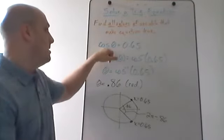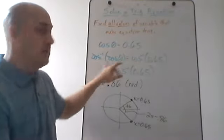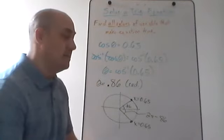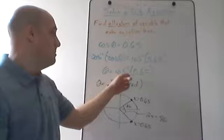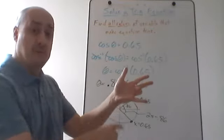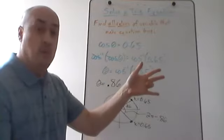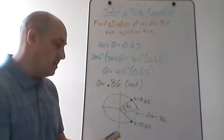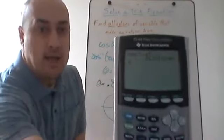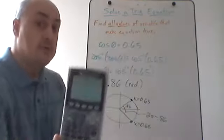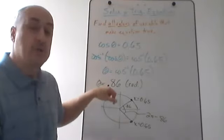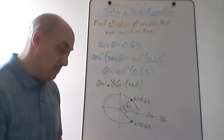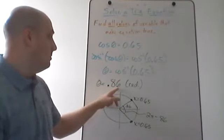Just like the last one, to cancel out the cosine I do cosine inverse on both sides of the equation. The cosine inverse cancels out the cosine, so I get theta equals cosine inverse of 0.65. Unlike that last one where sine inverse of one half was a number from my trig hand, 0.65 is not one of the numbers that shows up on my trig hand. So I need to use my calculator. I put cosine inverse of 0.65 into my calculator — making sure it's in radian mode — and I get theta equals 0.86 radians.